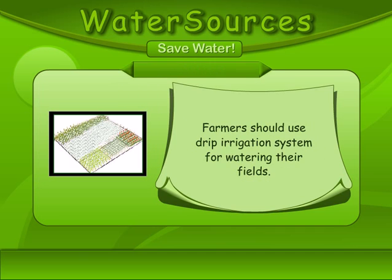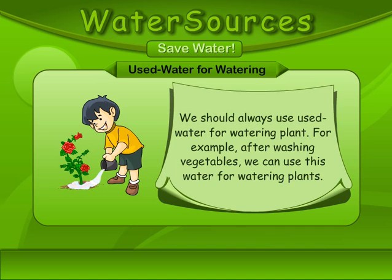Use drip irrigation. Farmers should use a drip irrigation system for watering their fields. We should always use used water for watering plants — for example, after washing vegetables, we can use that water for watering plants.